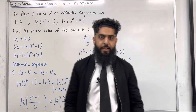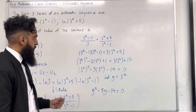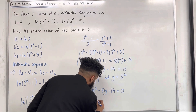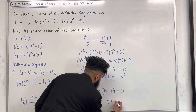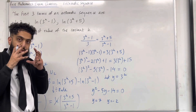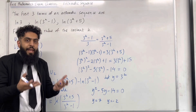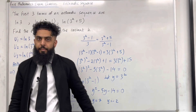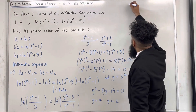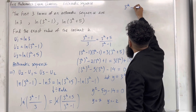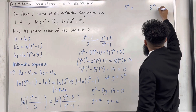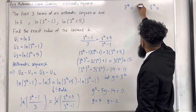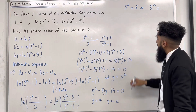Solving this quadratic equation gives y equals 7 and y equals minus 2. But I'm solving for k, not y, so I replace y with 3 to the power k. This gives 3 to the power k equals 7 or 3 to the power k equals minus 2.